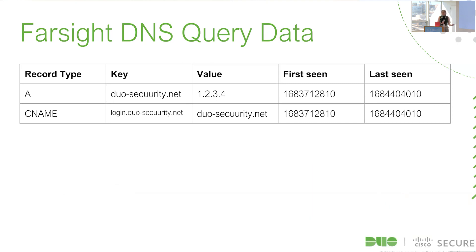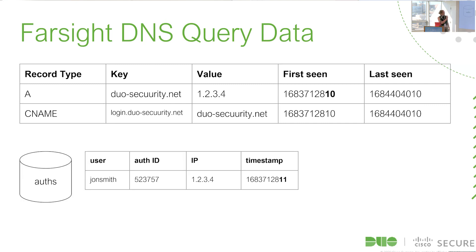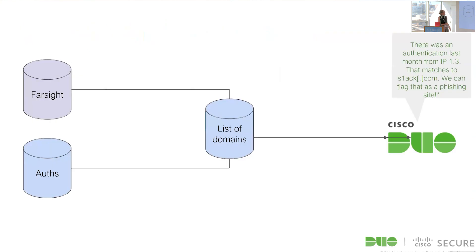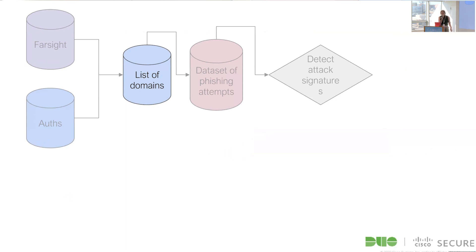Assuming we solved those problems: we now have auth log records — completed authentications with a username, source IP, and timestamp. We can match IPs in our database against IPs in the Farsight records within the valid time window of that DNS record, and generate a list of IP-domain pairs to evaluate for phishing domains. We'd also want to include all intermediate CNAME domains.